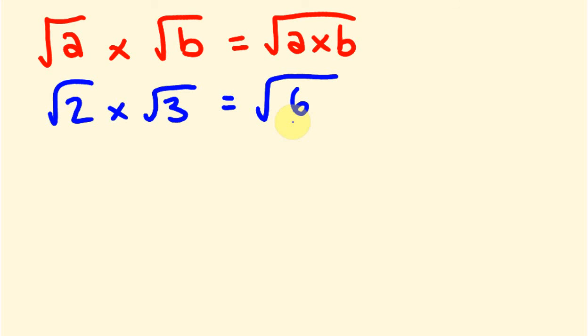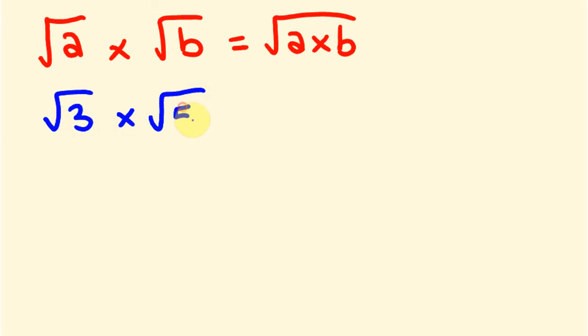I'll give you another one of these, you're going to see how easy these are going to be. Say I did the square root of 3 times the square root of 5. It's going to be equal to the square root of 3 times 5 which is 15. That's really easy, right?